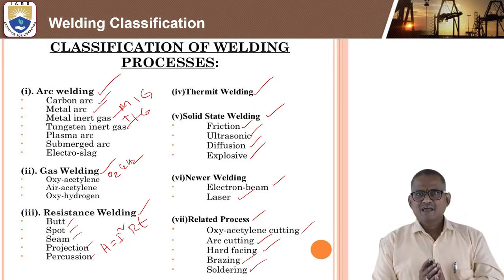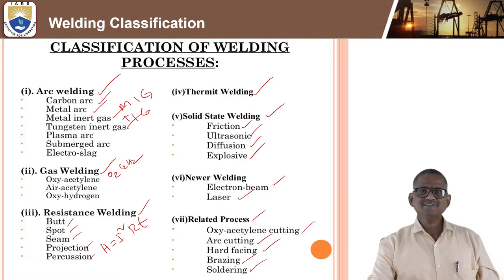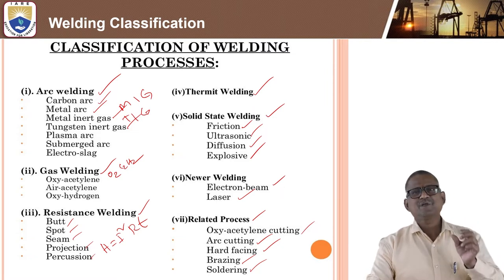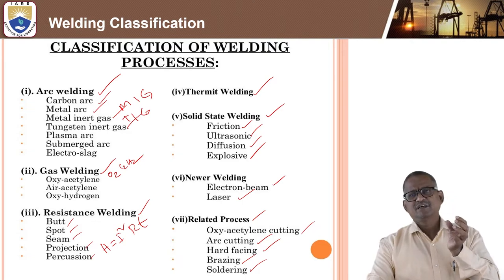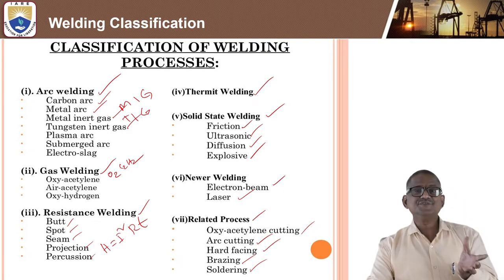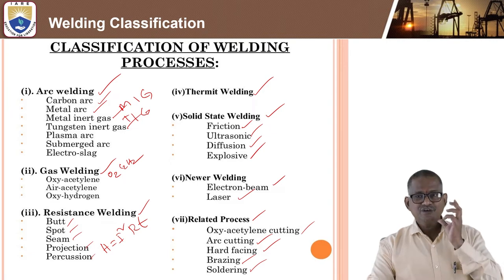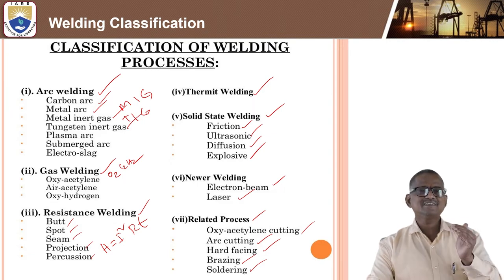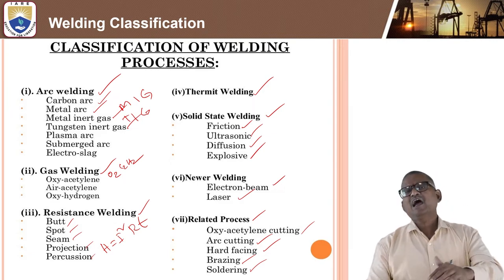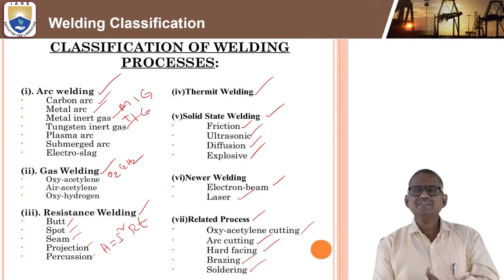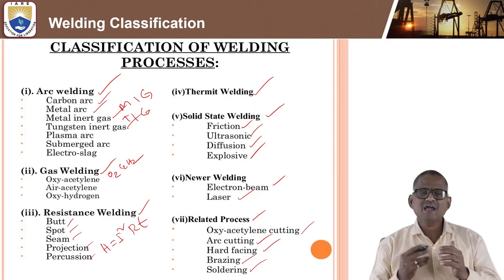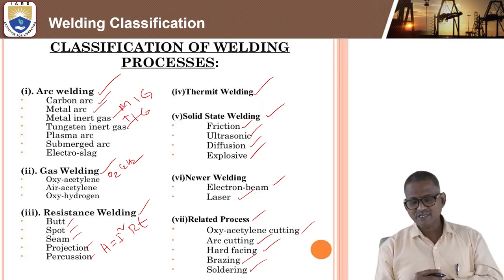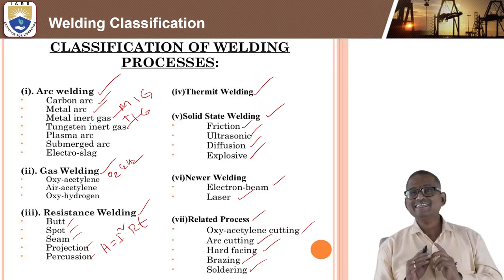These are the classifications of welding processes. In all these processes while performing, you may get some imperfections or welding defects. The key questions are: what are the defects, how do you find them, what are the causes, and how do you remedy them? Based on that, good quality welding can be achieved in industry.